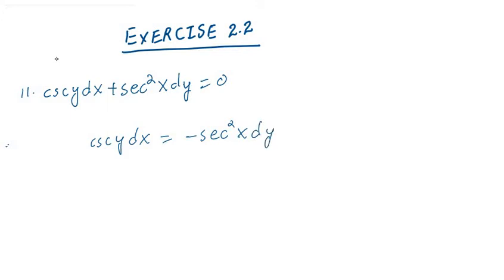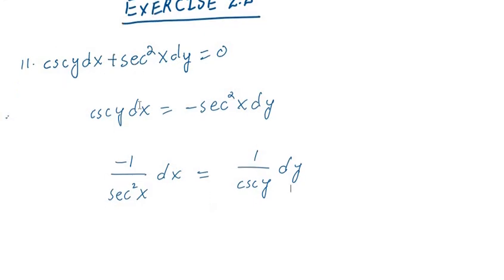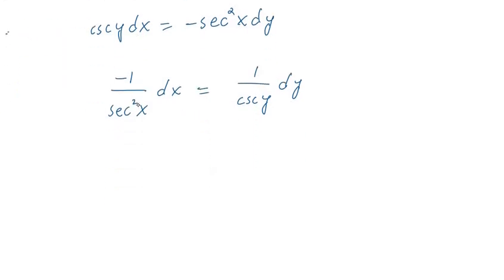Now you can multiply the secant squared X with the denominator of this term, so you will have secant squared X. I am also moving this negative sign to this side because we want all the constants with the terms involving X, and you will have secant Y on this side dy.